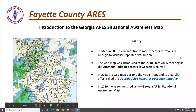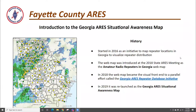In 2019, I was adding a lot of functionality and data layers that really turned it from just a repeater map into a situational awareness map. So in 2019, I renamed it the ARIES Situational Awareness Map.